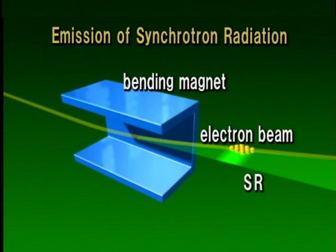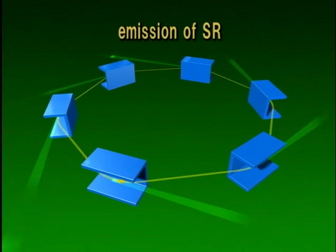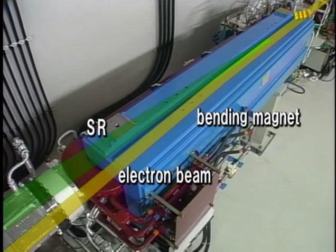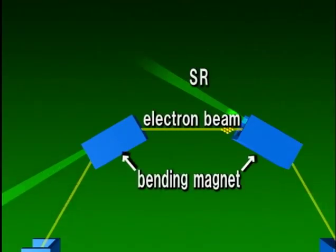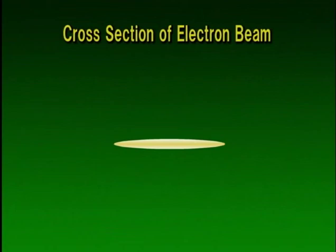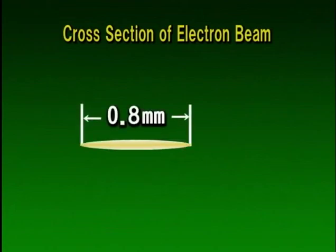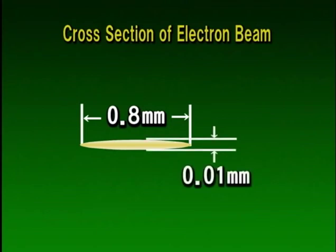The synchrotron radiation produced at Spring-8 is used for many different research purposes. Synchrotron radiation is emitted when an electron traveling near the speed of light is deflected by a magnetic field in a so-called bending magnet. The emission occurs tangential to the electron orbit and is highly directional and polarized. In order to enhance brightness, the electron beam is focused to the extremely small size of 0.8 mm in width and 0.01 mm in height.